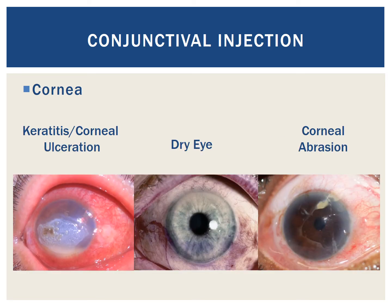Corneal insults can also lead to conjunctival injection. On the left, we have an image of keratitis with corneal ulceration, due to infection or inflammation of the cornea from loss of corneal epithelial integrity. Common causes include poor contact lens hygiene, viral, fungal, or bacterial pathogens, or systemic disease. The middle image shows keratoconjunctivitis sicca, or dry eye, which causes inflammation of the conjunctiva and cornea due to tear deficiency and is typically caused by the environment or lacrimal gland deficiency. On the right, we can see an example of corneal abrasion, often due to traumatic injury causing corneal epithelial loss, severe pain, and conjunctival injection.